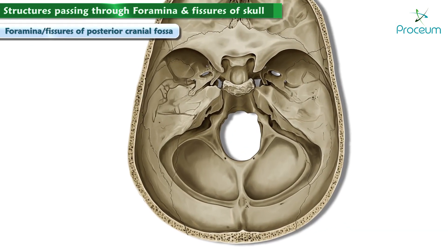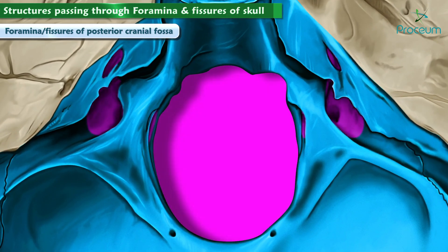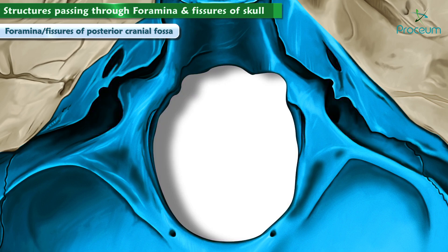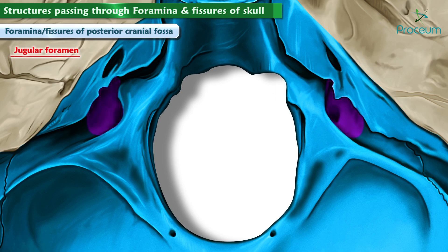There are four main foramina in the posterior cranial fossa, and we are going to list them in order of the cranial nerves that enter and exit through these foramina. The internal acoustic meatus transmits two cranial nerves: the seventh cranial nerve, the facial nerve, and the eighth cranial nerve, the vestibulocochlear nerve.